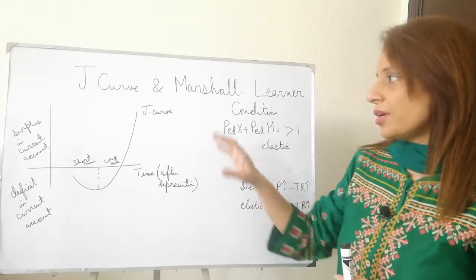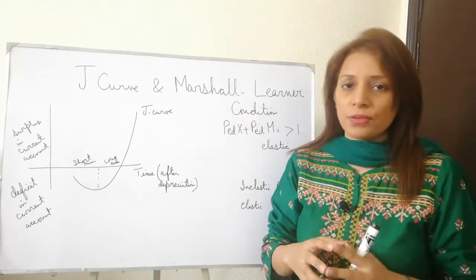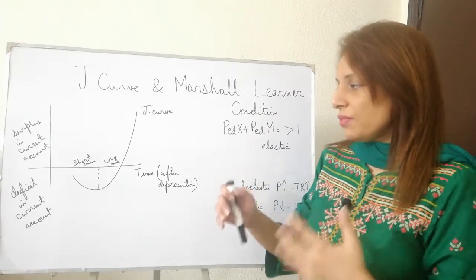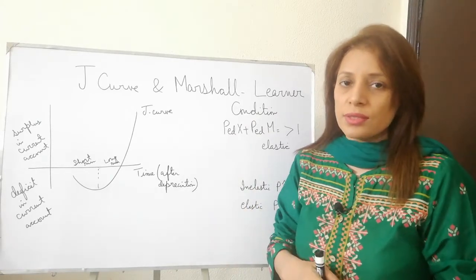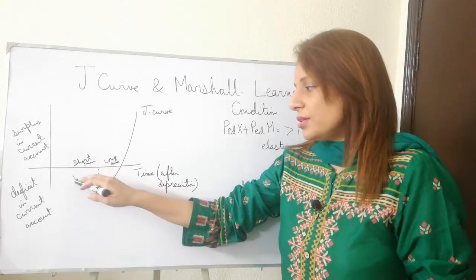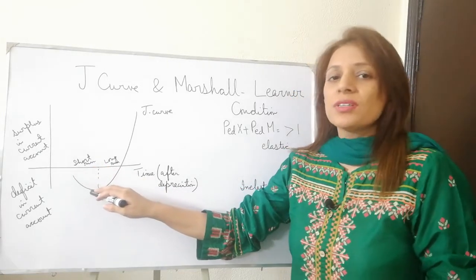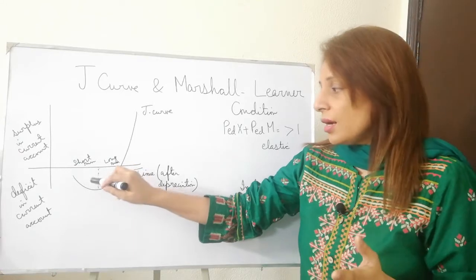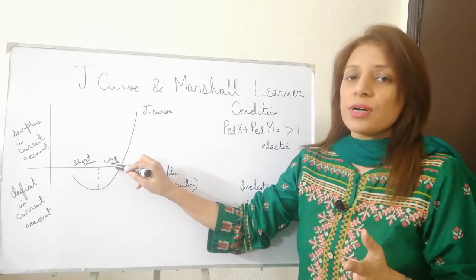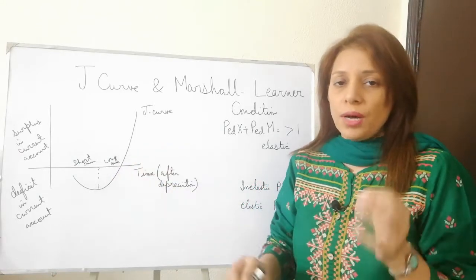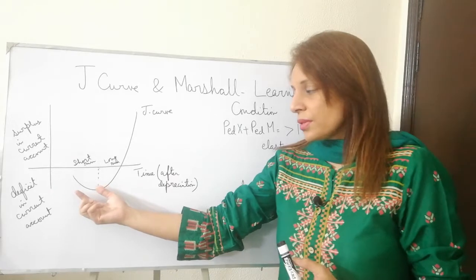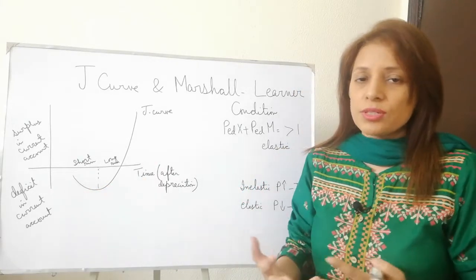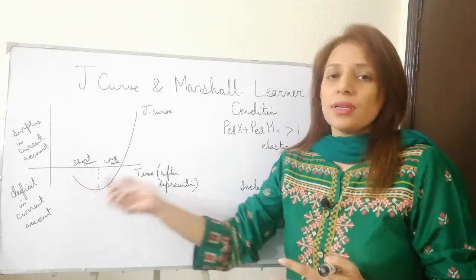Then, most importantly, the J Curve. What is the J Curve? The J Curve shows that whenever there is depreciation in the currency, in the short run the deficit will further deteriorate. It will not improve — it will further deteriorate — and then in the long run it will start improving. Why? Because in the short run, the demand for exports, or demand for goods and services, is a bit inelastic.